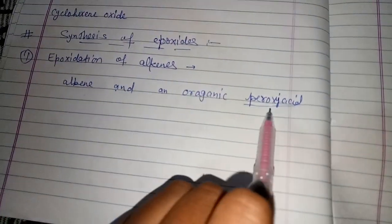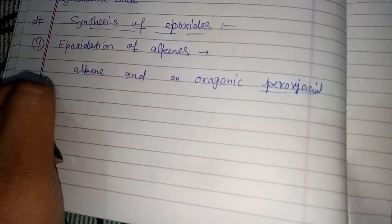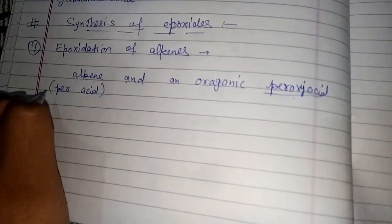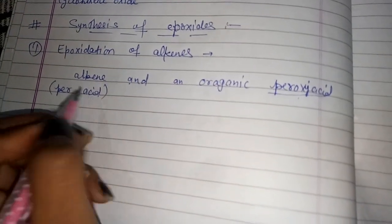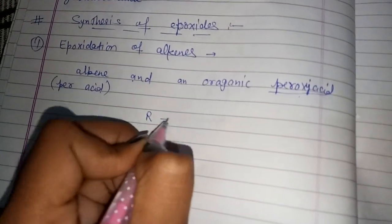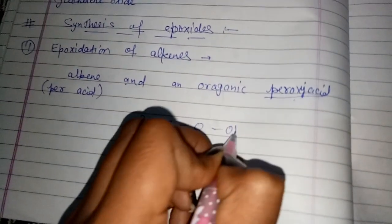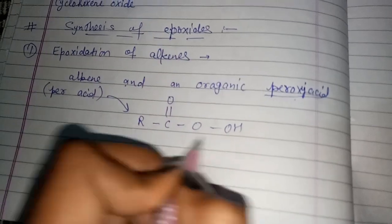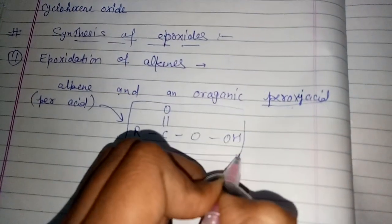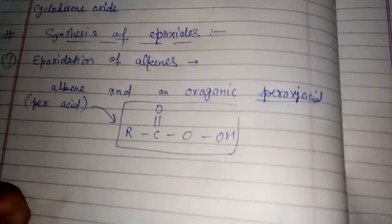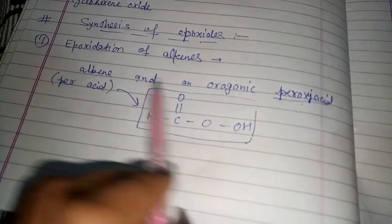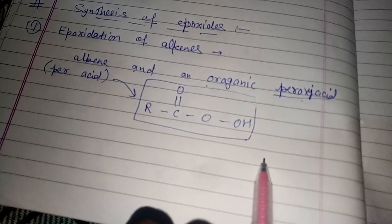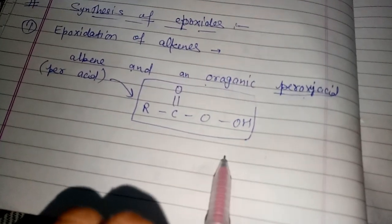This peroxy acid is also known as per acid. The structure of per acid is: R-C(=O)-O-OH. This is our per acid.